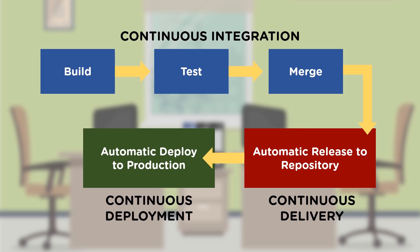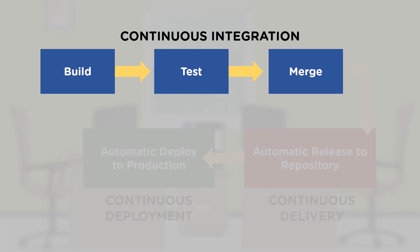This release automation happens when test case execution is successful. At the end, we have automated deployment to the production environment, which we call continuous deployment. Together, these form end-to-end CI/CD automation.